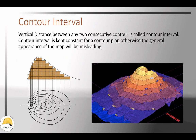What is the contour interval? The contour interval is the vertical distance between two contour lines. In this picture, these two contour lines show that vertical distance.